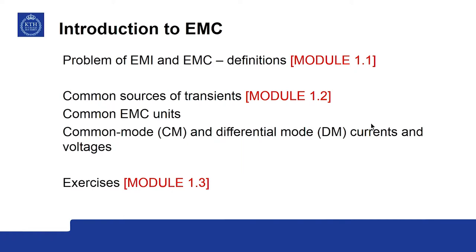In module 2, common sources of transients will be described — like switching transients, lightning, etc. We will also talk about commonly used EMC units: what is meant by a decibel, what is meant by representing distances in terms of wavelengths rather than meters, why in EMC studies we represent how many wavelengths long something is, and what is meant by common mode and differential mode currents and voltages. Module 3 will be devoted to exercises and problems, mostly in the form of homework, so that you become very familiar with the concepts introduced.